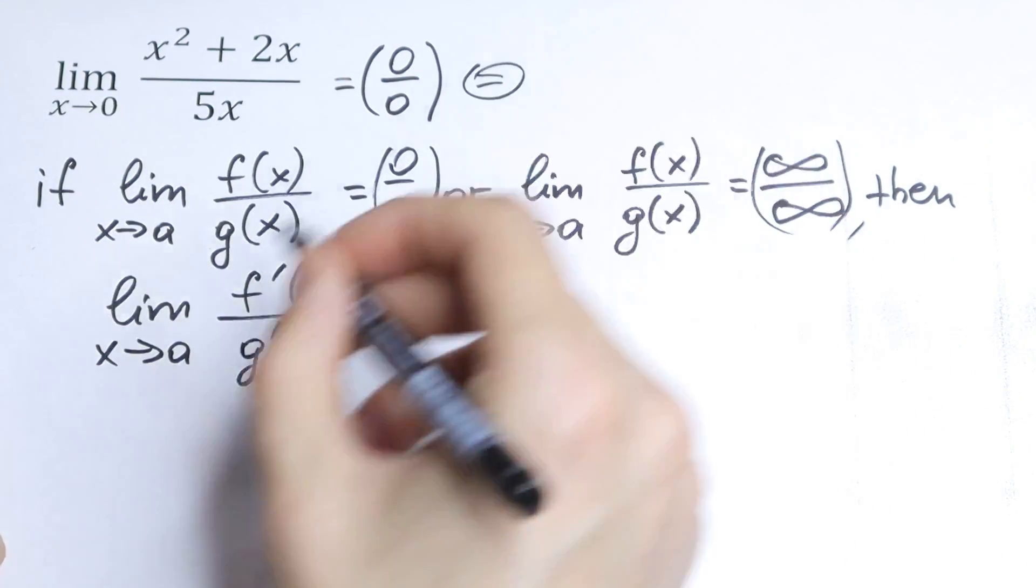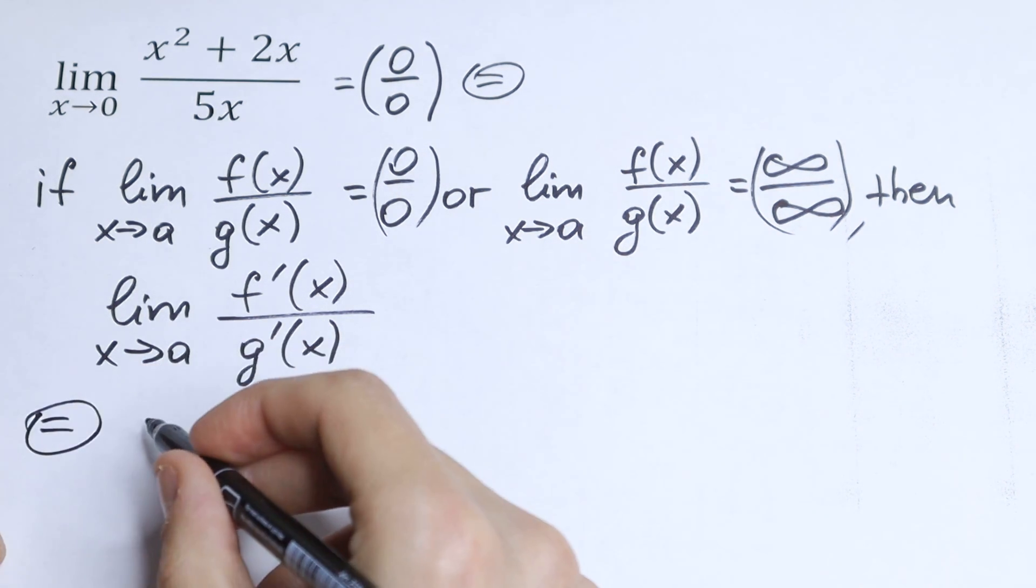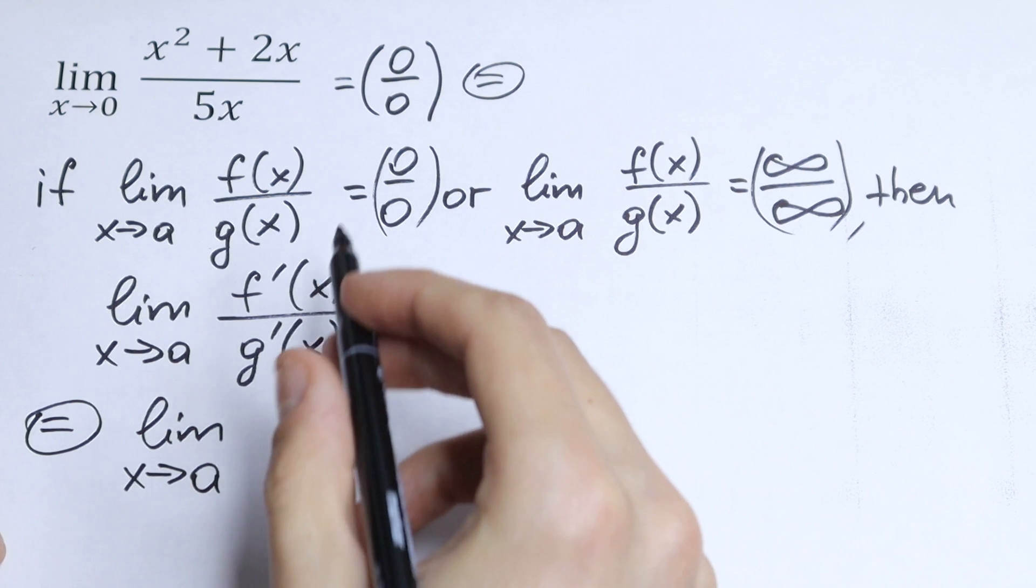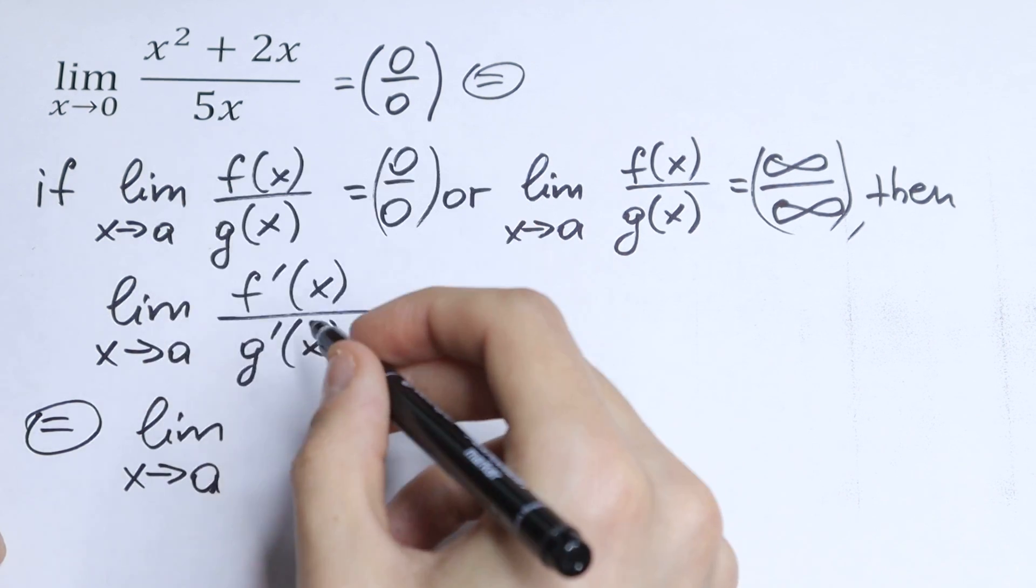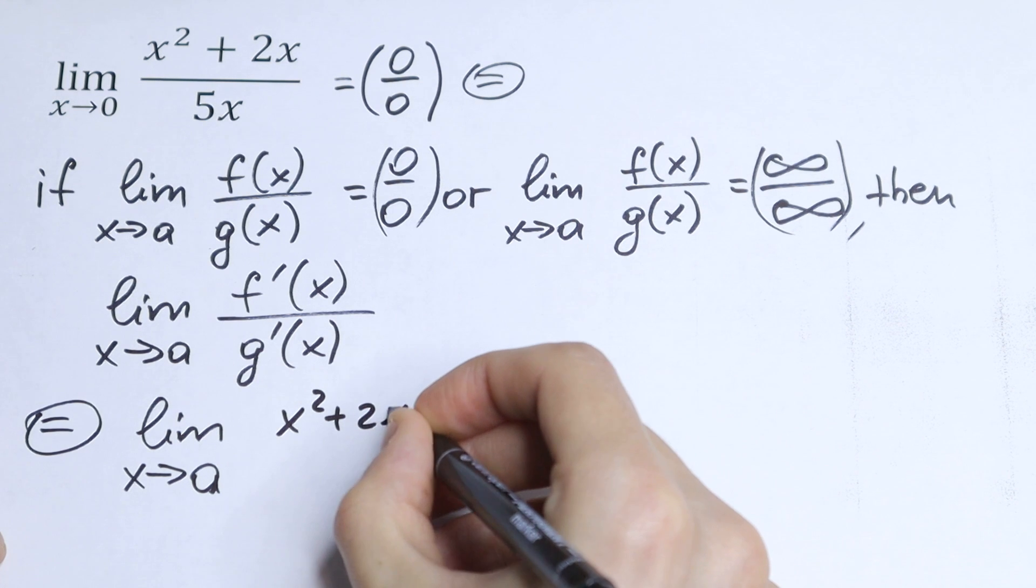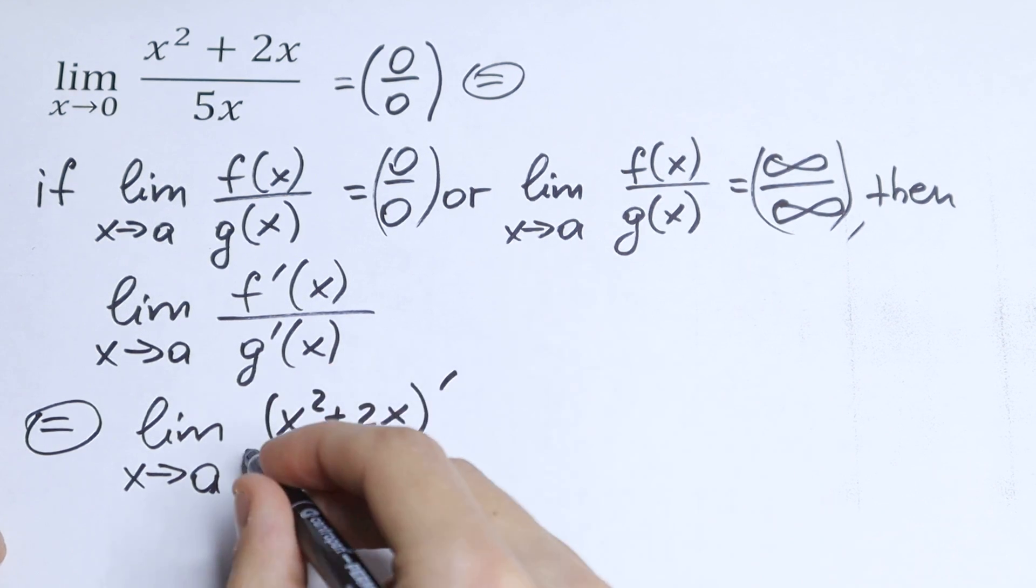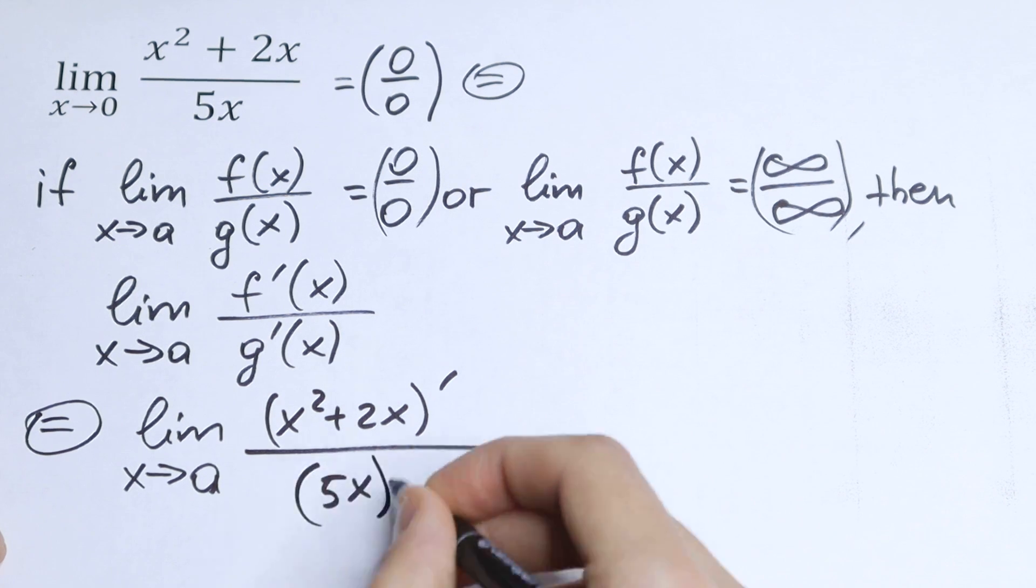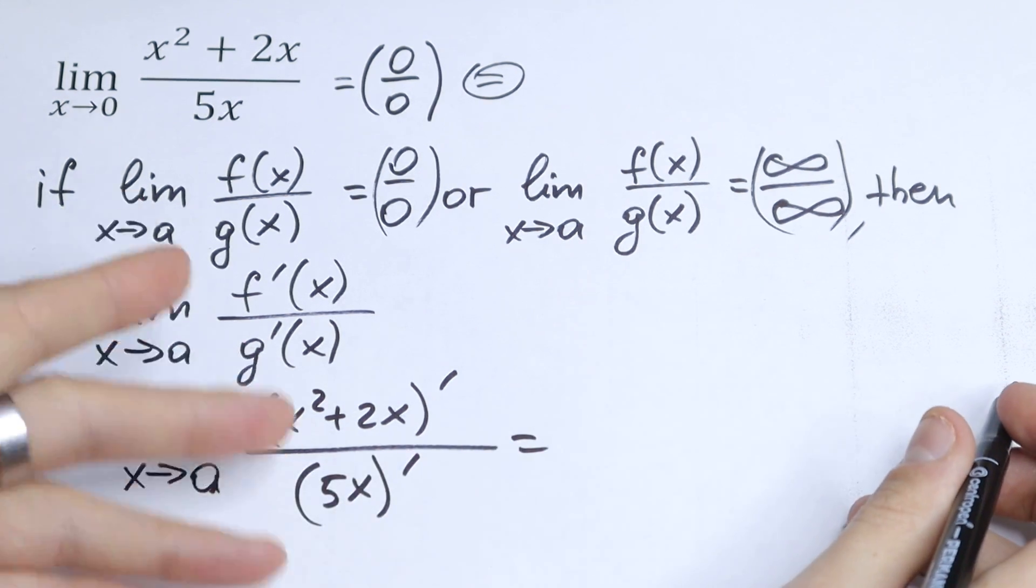So as a result we will have limit x approaches to 0 of the function x squared plus 2x, of course finding derivative right here, and dividing by 5x derivative as well. This is a classic, this is a table case, so we all know that this derivative...